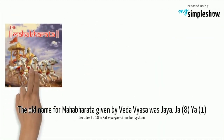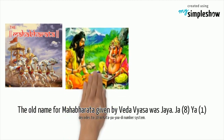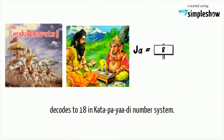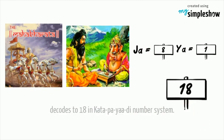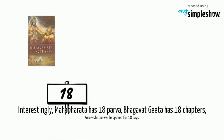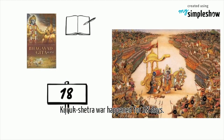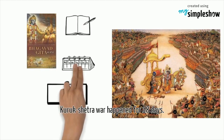The old name for the Mahabharata given by Veda Vyasa was 'Jaya.' Decoding it — 'Ja' (8) and 'Ya' (1) — gives 81, which reversed in Kata Piyadi convention gives 18. Interestingly, the Mahabharata has 18 Parvas, the Bhagavad Gita has 18 chapters, and the Kurukshetra war lasted 18 days.